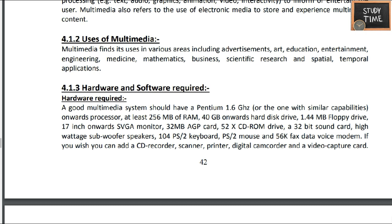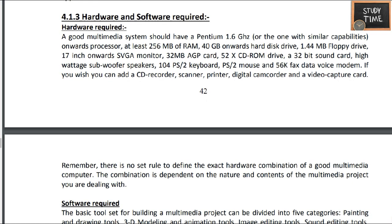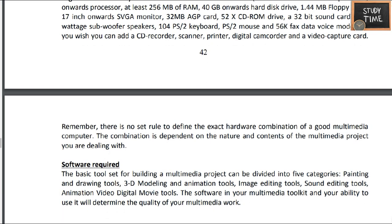Next we'll see what hardware and software are required. A good multimedia system should have a Pentium 1.6 GHz onwards processor, at least 256 MB of RAM, and a 40 GB onwards hard disk drive. You can also add a CD recorder, scanner, printer, digital camcorder, or a video capture card.